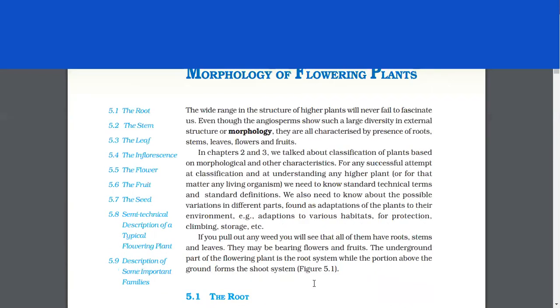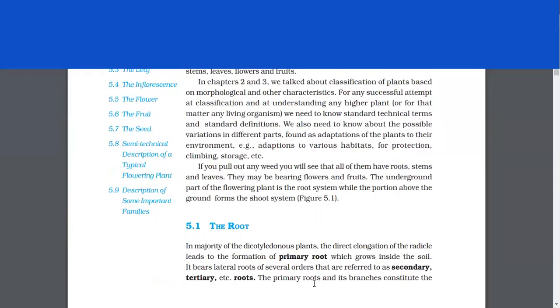In chapters 2nd and 3rd, we talked about classification of plants based on morphological and other characteristics. For any successful attempt at classification and at understanding any higher plant or for that matter any living organism, we need to know standard technical terms and standard definitions. We also need to know about the possible variations in different parts found as adaptations of the plants to their environment. For example, adaptations to various habitats for protection, climbing, storage, etc.